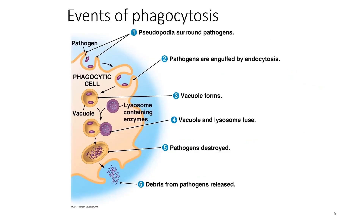Let's illustrate the phagocytosis process. First, the pseudopodia — a temporary protrusion from the membrane of the phagocytic cell — surrounds the pathogen. The pathogen is then engulfed by endocytosis, forming a phagosome. The lysosome, containing digestive enzymes, fuses with the phagosome and destroys the pathogen. The debris from the pathogen is then released into the environment.